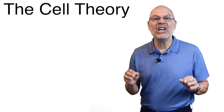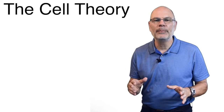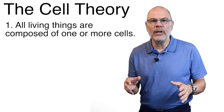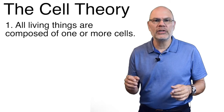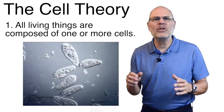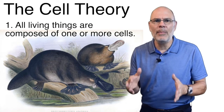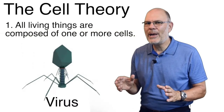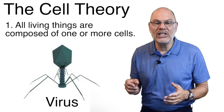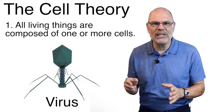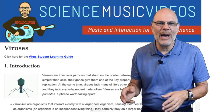Let's end by discussing a key idea in biology, the cell theory. The theory has three parts. The first is that all living things are composed of one or more cells. Here's a paramecium, a single-celled or unicellular organism. And here's a painting of a multicellular organism, a platypus. There's nothing alive that's not at least one cell. You might think that viruses are an exception to that, but viruses aren't independent living things. They're parasites of cells. You can check out my virus tutorial and my song, I'm a virus.